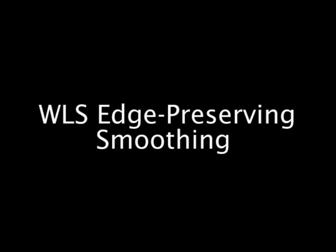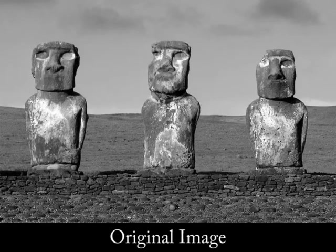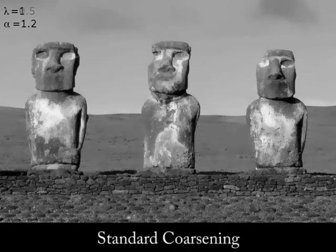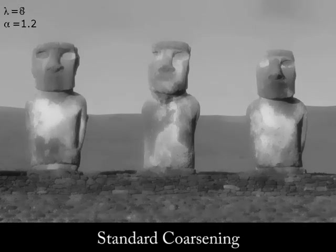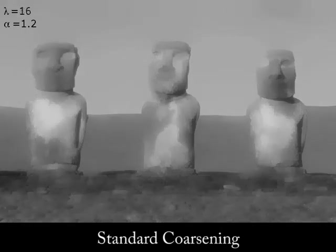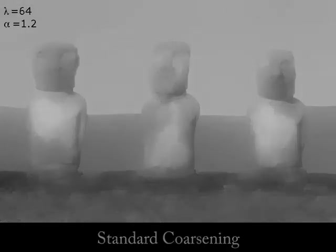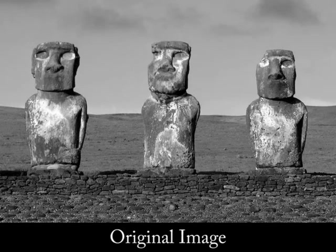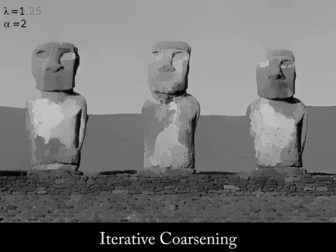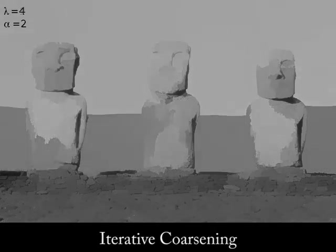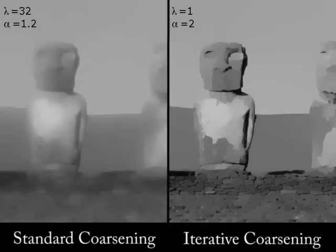In this work, we use the weighted least squares framework to perform edge-preserving smoothing. As you can see, this operator is able to progressively coarsen the image without introducing strong blurring, over-sharpening, or any other obvious artifacts. Applying the same operator in an iterative fashion generates coarsened images that tend towards a piecewise constant, which is desirable for some applications.